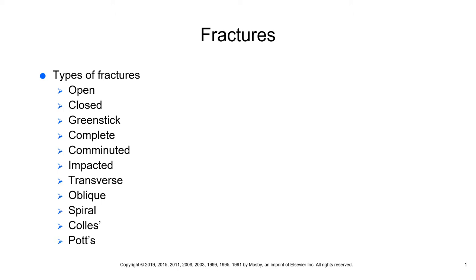When describing a fracture, we say it is either closed or open. With an open fracture, bone is protruding from the skin. This is more serious due to tissue damage, it will require surgery, and the patient is at high risk for infection because the bone has actually protruded through the skin.